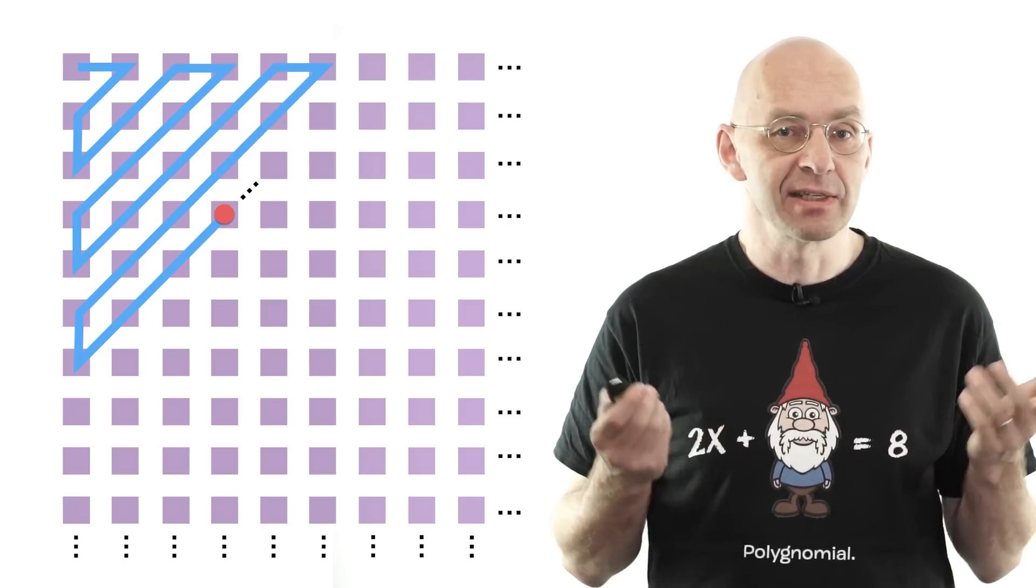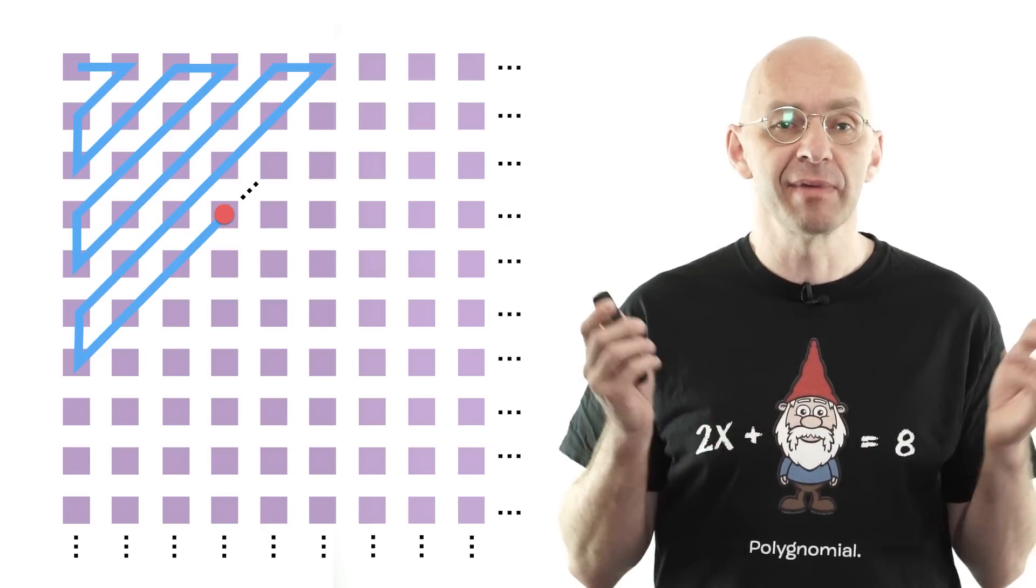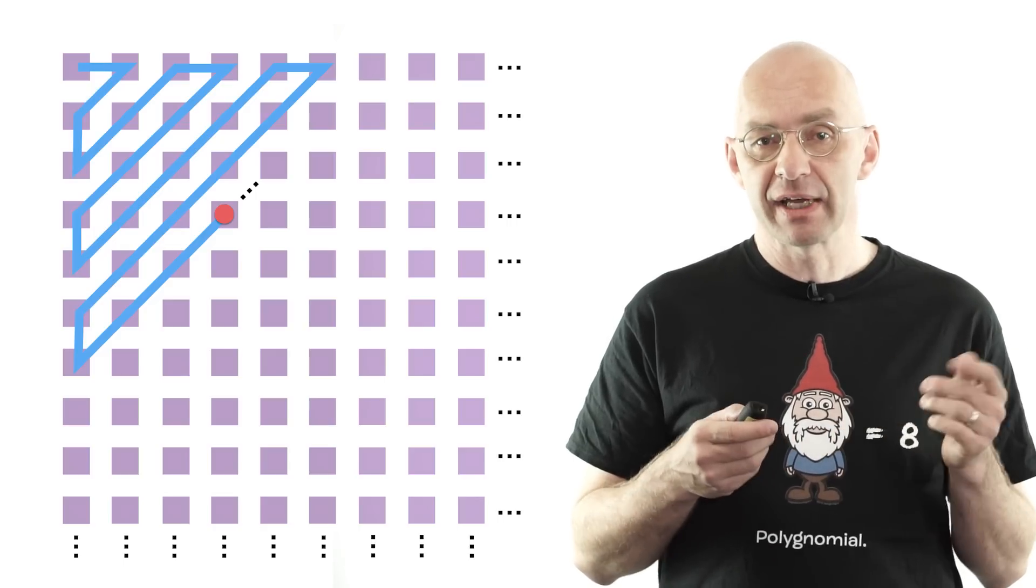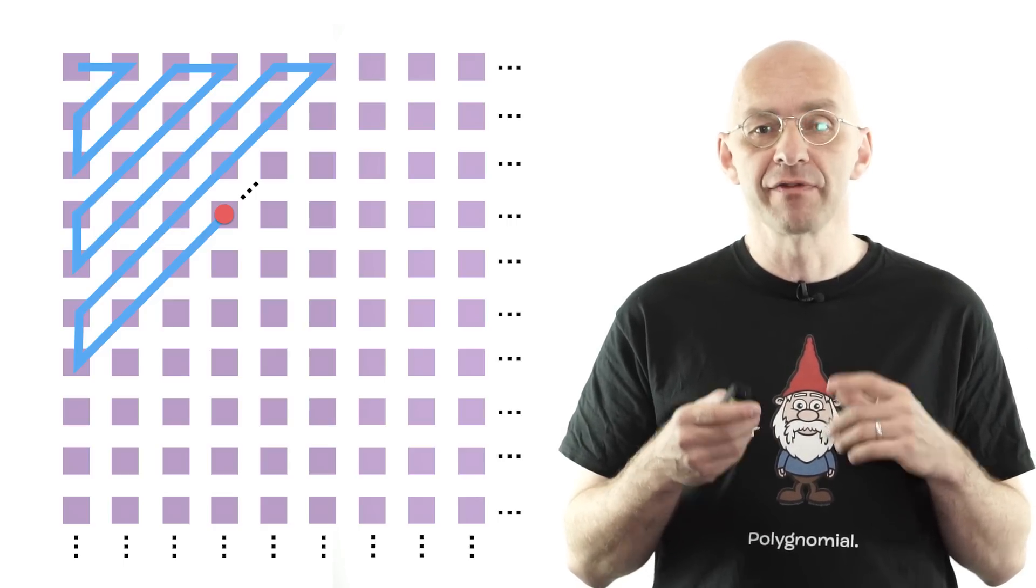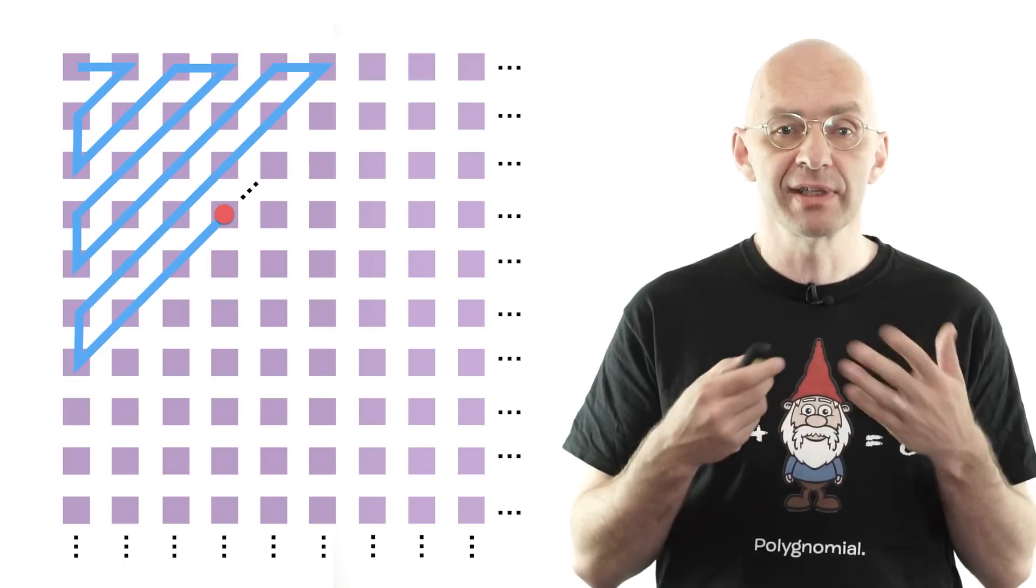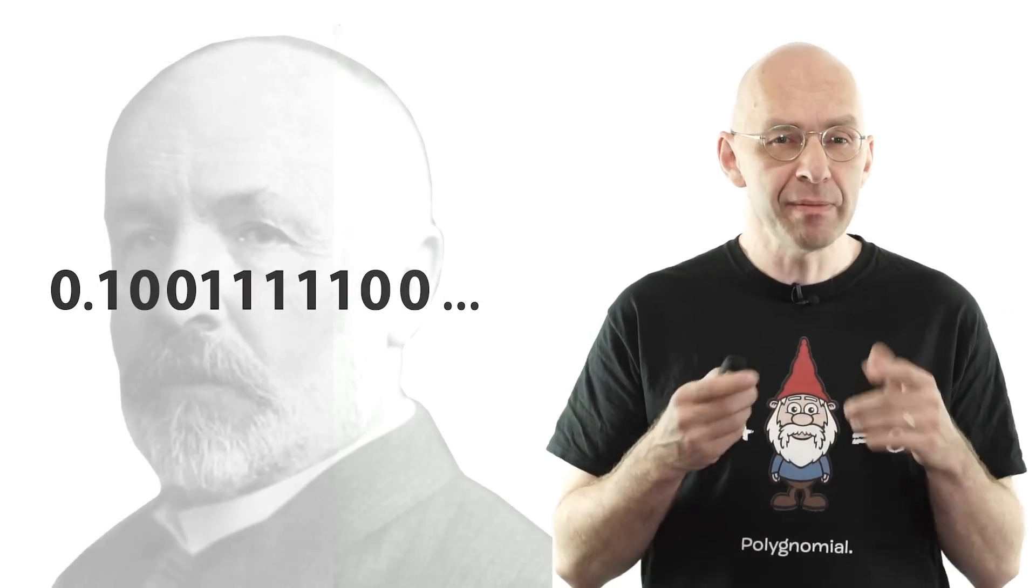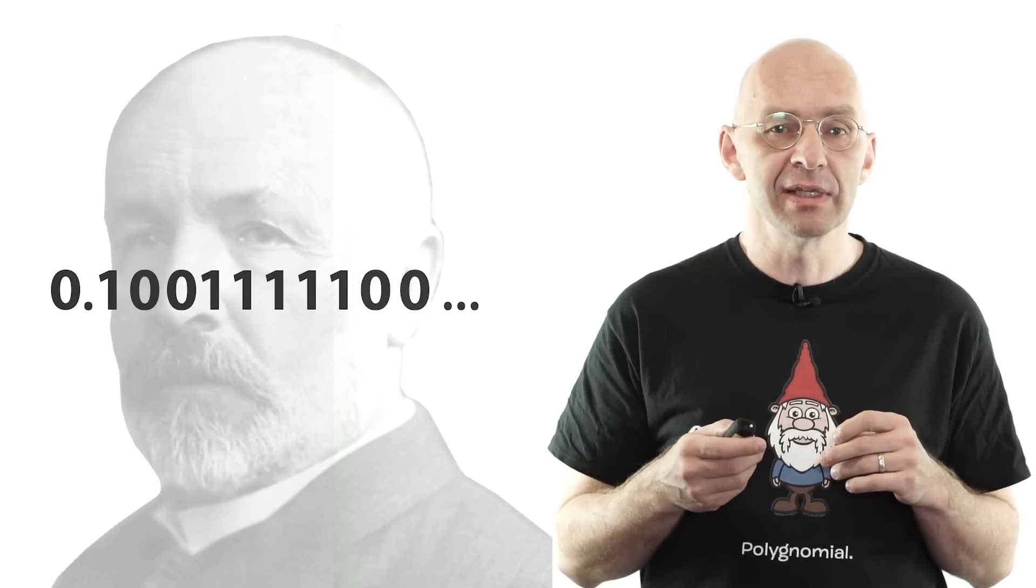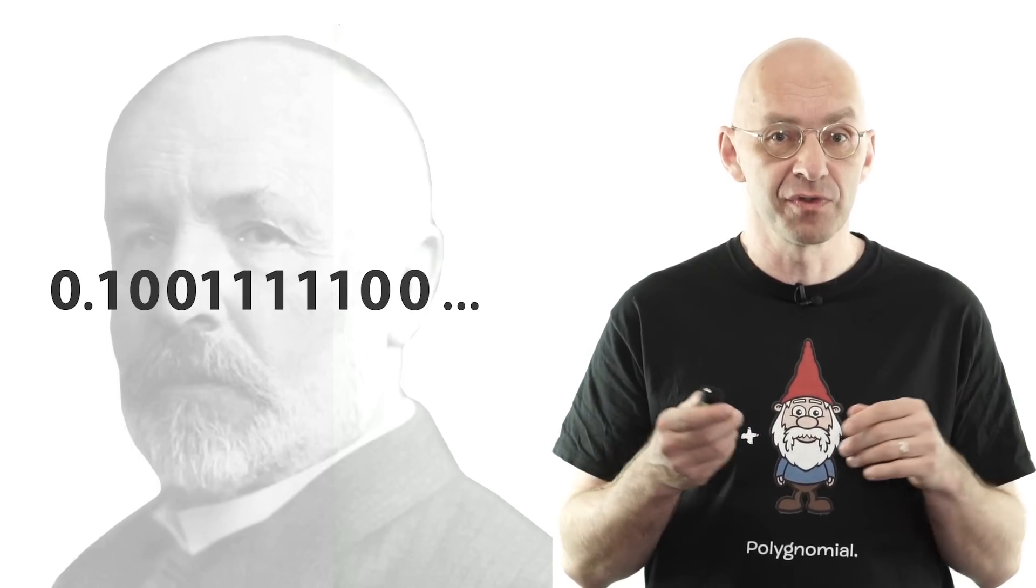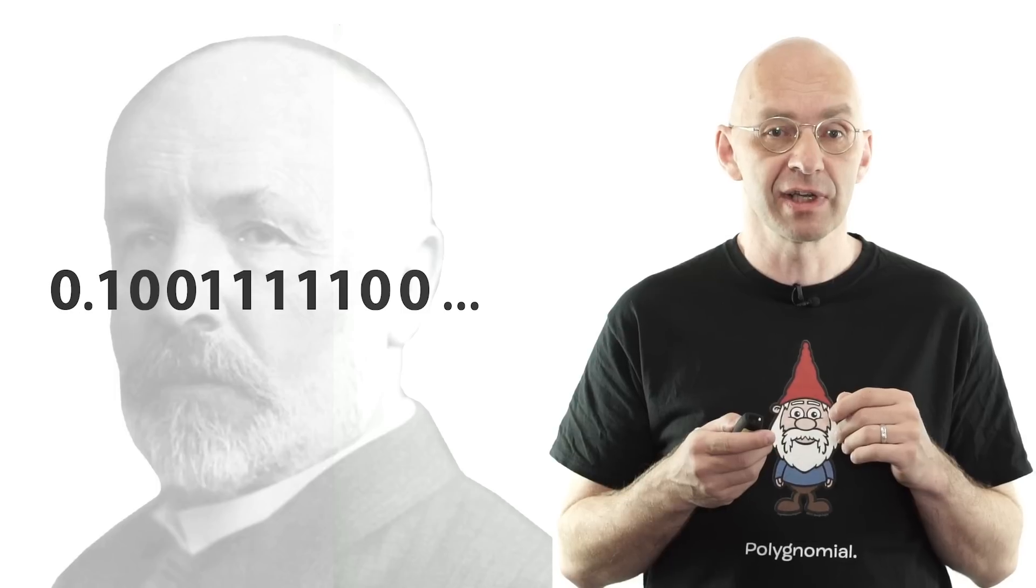As I said, this is just one way to list the algebraic numbers. There are infinitely many others. Cantor diagonalization translates the one I've chosen into a transcendental number that starts out like this.